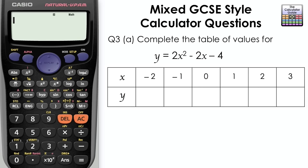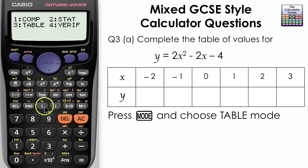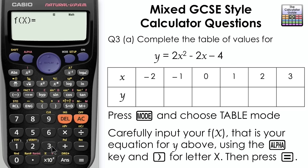We're going to use table mode on the calculator to help with this question, so press MODE and choose table mode. Carefully input your function of x, that is the equation for y above, using the ALPHA key and right bracket for letter x. Then press equals.